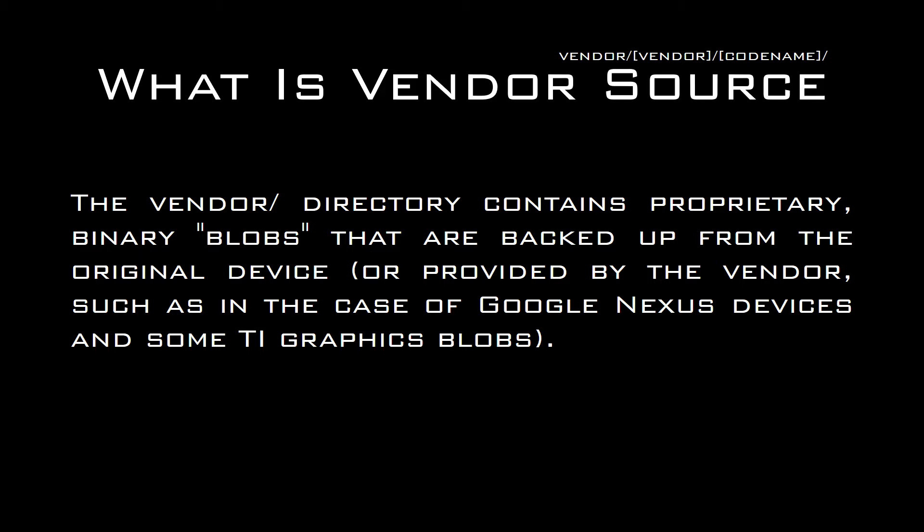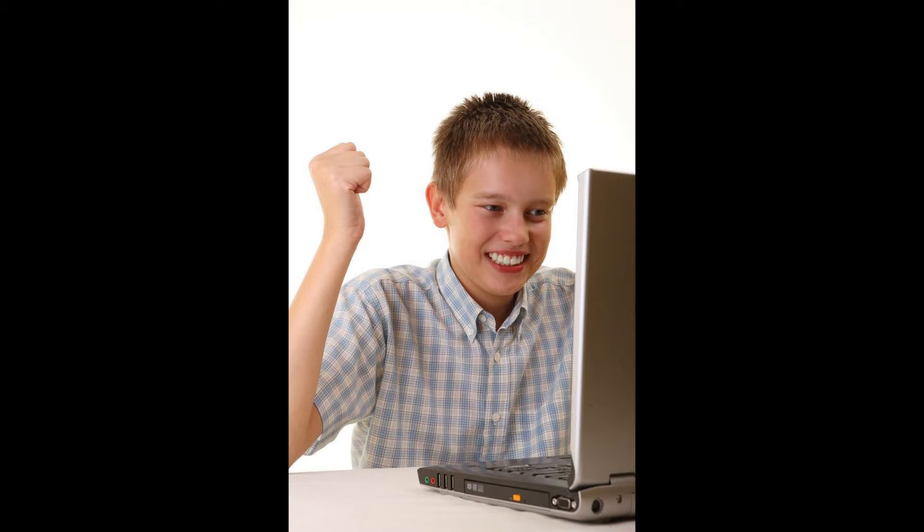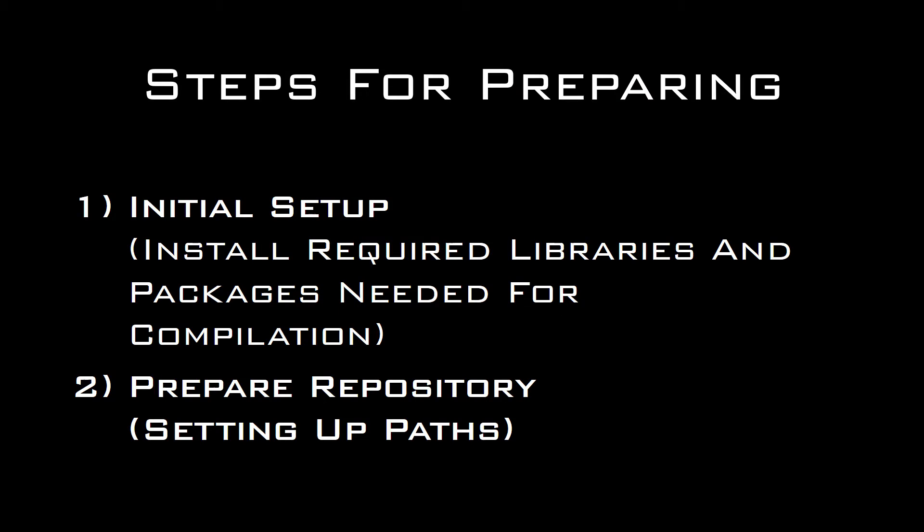Now that we are aware of all the files we need for compiling a ROM, let's take a look at the steps for preparing. The first thing we need to do is the initial setup — in this process we'll install all the required libraries and packages needed for compilation. In the second step we'll be preparing the repositories, setting up all the paths.